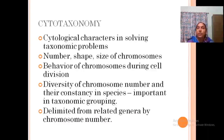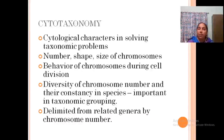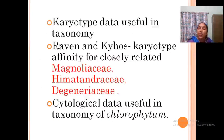In cytotaxonomy, cytology refers to chromosomes — their structure, size, shape, and behavior. It is helpful in delimiting taxa; when there is confusion or a disputed taxon arises, you can apply cytotaxonomy. Karyotyping is very significant and useful in this field. Ravan and Kyhos studied and analyzed the karyotype of Magnoliaceae, Himantandraceae, and Degeneriaceae to understand their relationships.